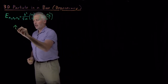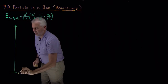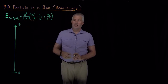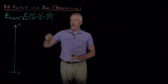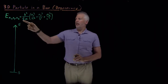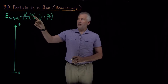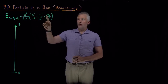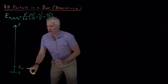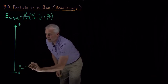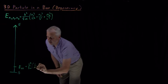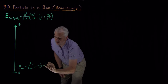Let's draw an energy ladder showing the energy levels for the states of that particle in a box. For any integers n_x, n_y, and n_z, I can calculate the energy and place it on this ladder. The lowest possible energy — the ground state — is found by making n equal to 1. So if I choose n_x = 1, n_y = 1, n_z = 1, that gives E_(1,1,1) = h²/8m times (1²/a² + 1²/b² + 1²/c²).